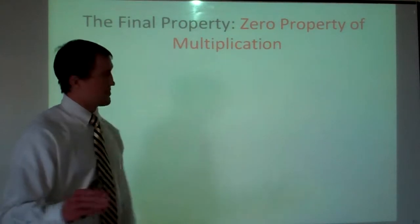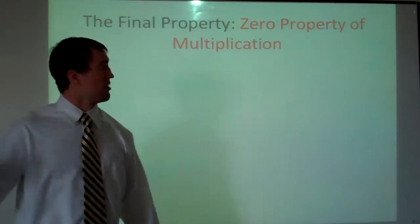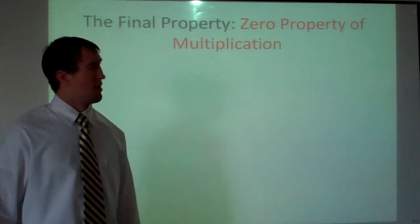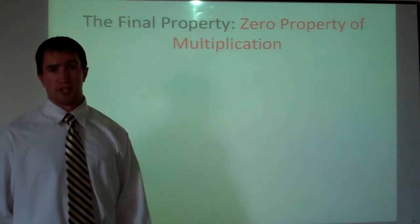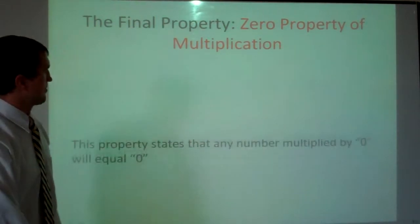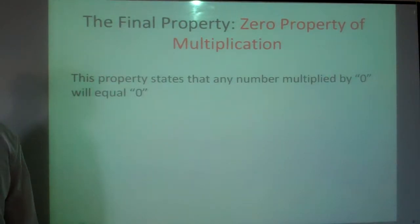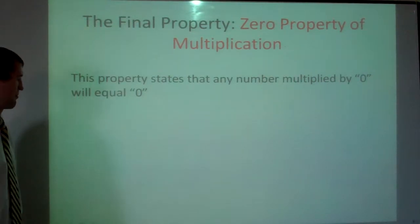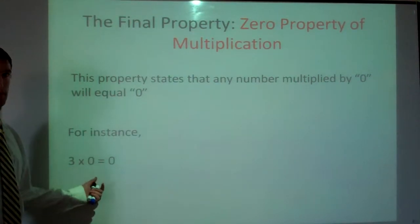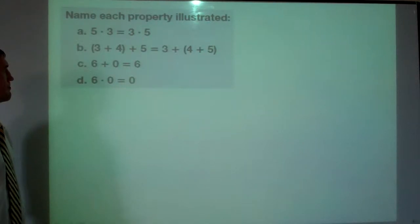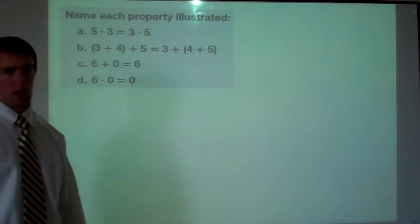Our last property is the zero property of multiplication. Any time you multiply by zero, you're going to get zero. For instance, three times zero will give you zero.